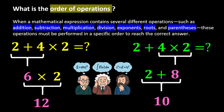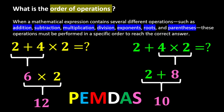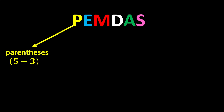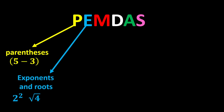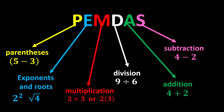This rule is known by a short and simple expression called PEMDAS, and each letter in the word PEMDAS is an abbreviation for a specific step. P stands for parentheses. E stands for exponents and roots. M stands for multiplication. D stands for division. A stands for addition. And S stands for subtraction. According to PEMDAS, we first calculate the parentheses, then the exponents, then multiplications and divisions, and finally additions and subtractions.